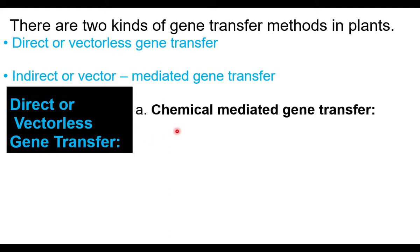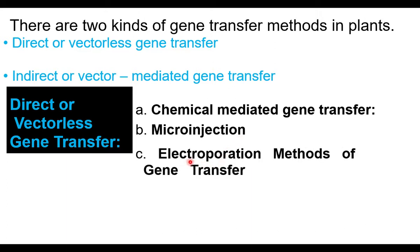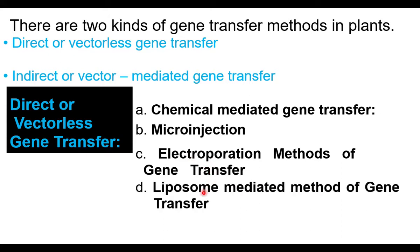The first method is direct or vectorless gene transfer. This includes: chemical mediated gene transfer, where chemicals are used to facilitate the uptake of foreign DNA by host cells; microinjection, where DNA is injected into the host cells; electroporation, where electrical fields create openings in the cell membrane to facilitate gene transfer; and liposome-mediated transfer. Gene gun or biolistics is also used to transfer foreign genes into plant cells.